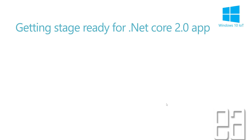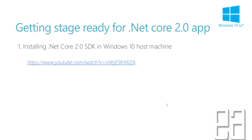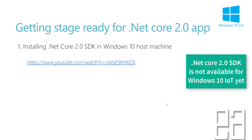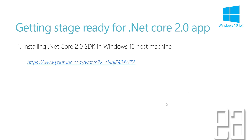The most important note is that installing the .NET Core 2.0 SDK cannot be done on the Raspberry Pi machine. Rather, we need to do the installation of the .NET Core 2.0 SDK on our Windows 10 host machine, because Microsoft has not released the .NET Core 2.0 SDK for Windows 10 IoT yet. It is available on other operating systems like Ubuntu Mate 16.04 LTS, but for Windows 10 IoT Core, it is not there yet.